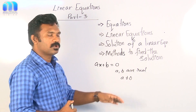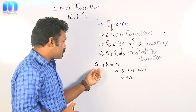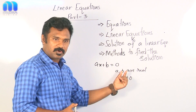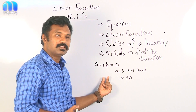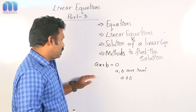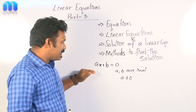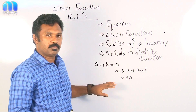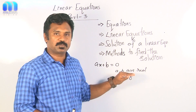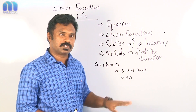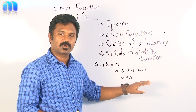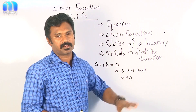A is not equal to 0. If A equals 0, then the expression becomes 0 plus B equal to 0, which means B equal to 0 — nothing will be there. So the standard equation must be in the form Ax plus B equal to 0, where A is not equal to 0 and A and B are real numbers.